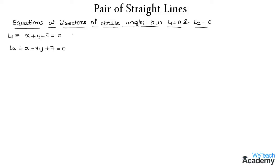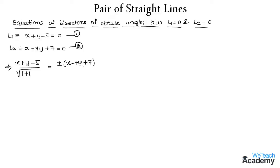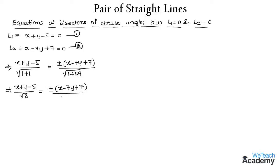These are the given lines, named equation 1 and equation 2. We need to find the equations of bisectors, so let us apply the condition. We get: (x + y − 5) / root(1² + 1²) equal to plus or minus (x − 7y + 7) / root(1² + (−7)²). This simplifies to (x + y − 5) / root(2) equal to plus or minus (x − 7y + 7) / root(50), where root(50) equals 5·root(2).